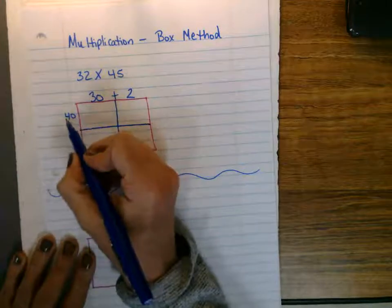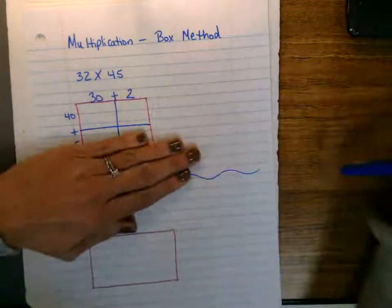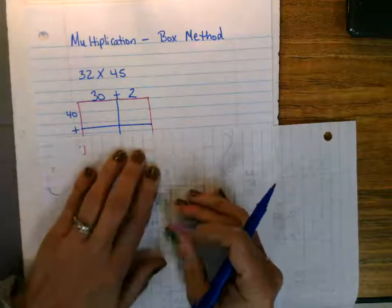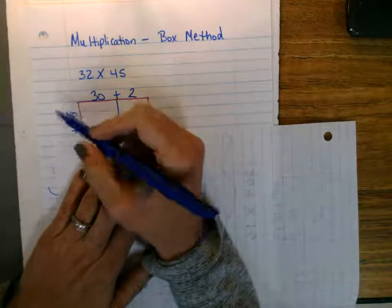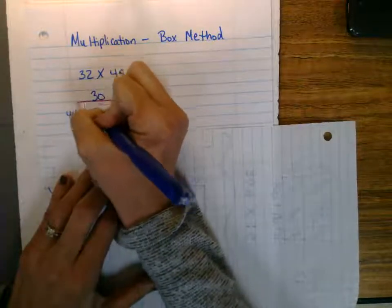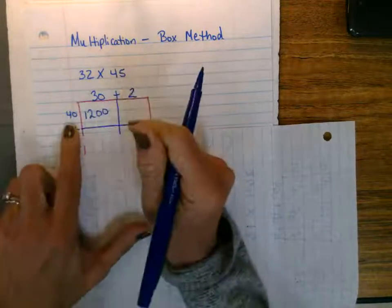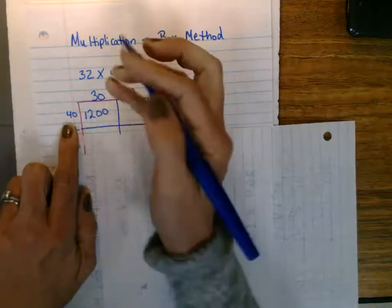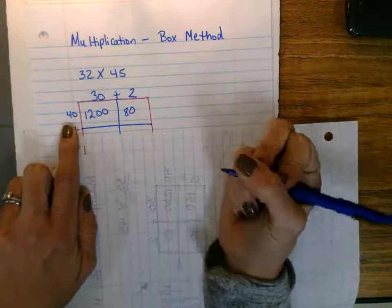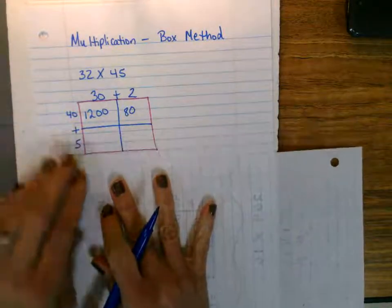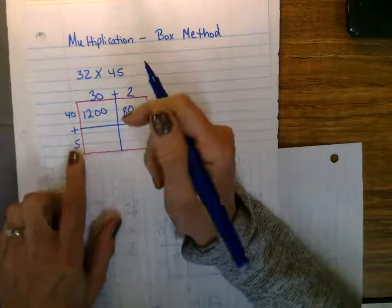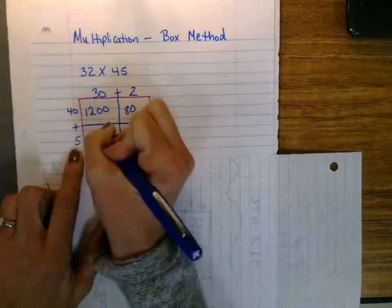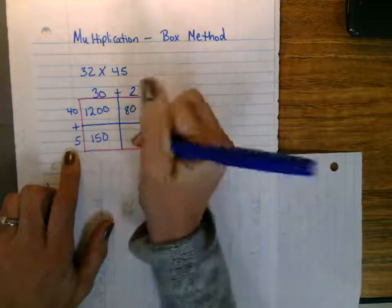So what I'm going to do, I'm going to start on the top, and you can cover up the bottom if you'd like, so it's less confusing. Once the kids get this, they get it, and they run with it. And we know a little trick, 4 times 3 is 12, and we add two zeros. And then I'm going to take the same number, and I'll multiply here. 4 times 2 is 8, and add a zero. Okay, then I'm just going to swap to the bottom and do the same. I'm going to do 5 times 30. 5 times 3 is 15, add a zero. And 5 times 2 is 10.